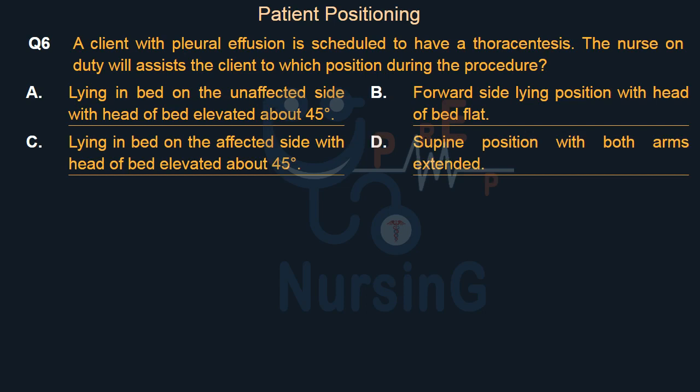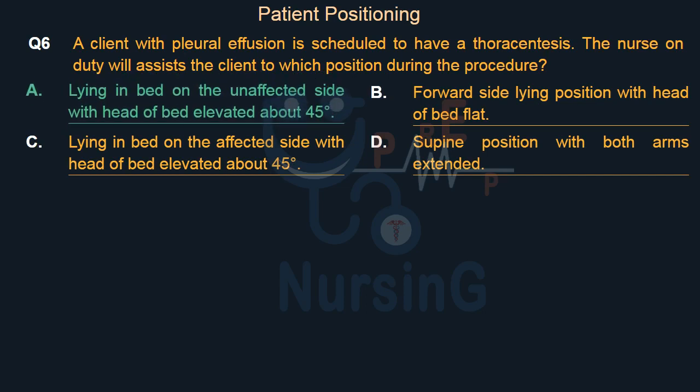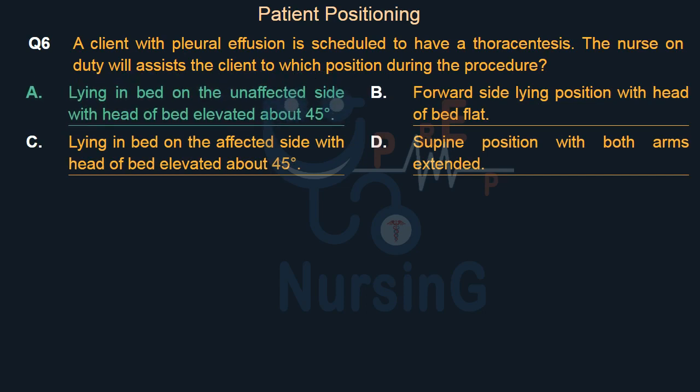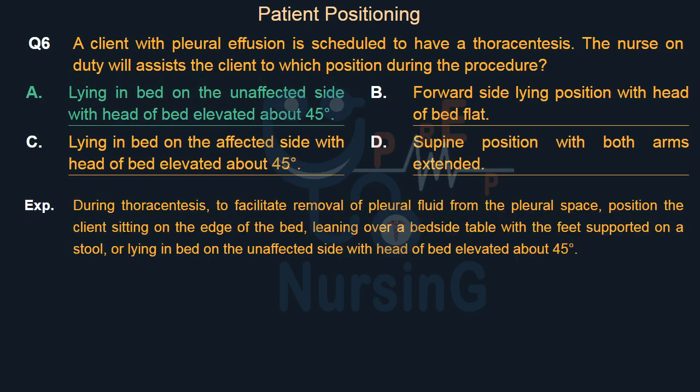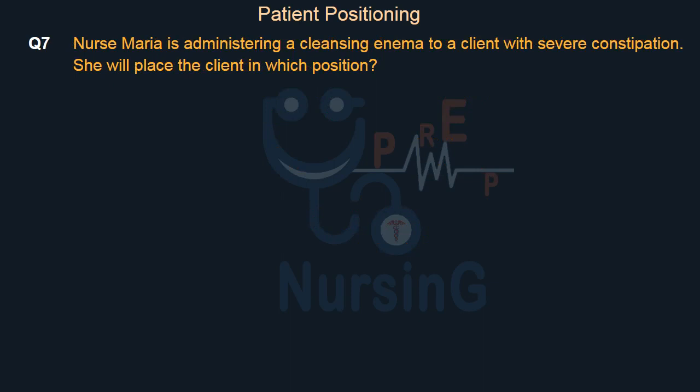The right answer is Option A, lying in bed on the unaffected side with head of bed elevated about 45 degrees. During thoracentesis, to facilitate removal of pleural fluid, position the client sitting on the edge of the bed leaning over a bedside table with feet supported on a stool, or lying in bed on the unaffected side with head of bed elevated about 45 degrees.